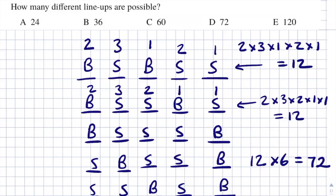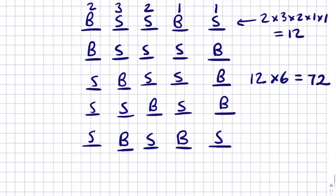That's the total number of lineups possible: 72, which is answer D. Therefore the final answer is D.